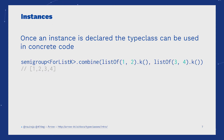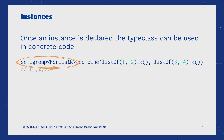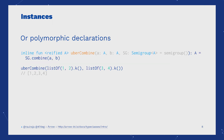Once an instance is declared for a given type class — in this case, the semigroup for ListK — we can use the semigroup syntax to combine ListK values. Type classes allow us to create programs that are polymorphic.